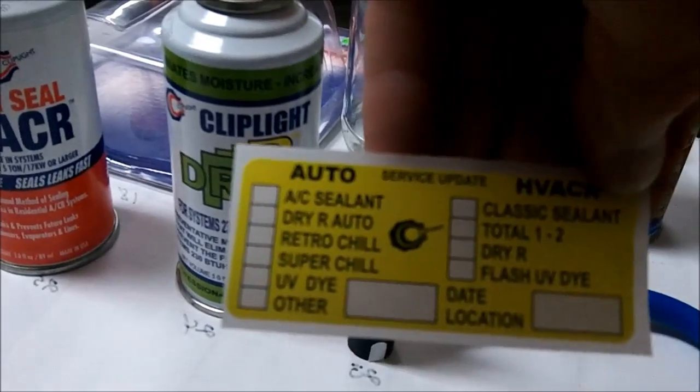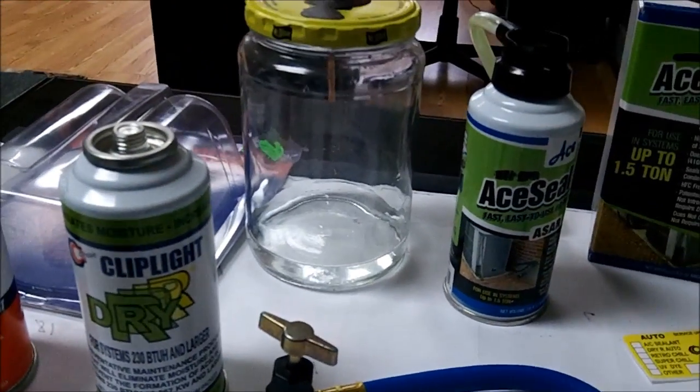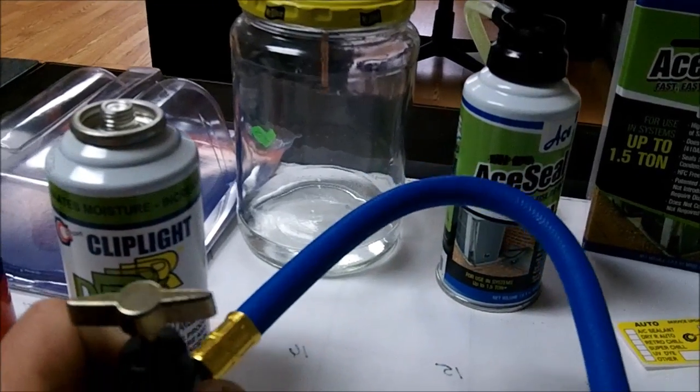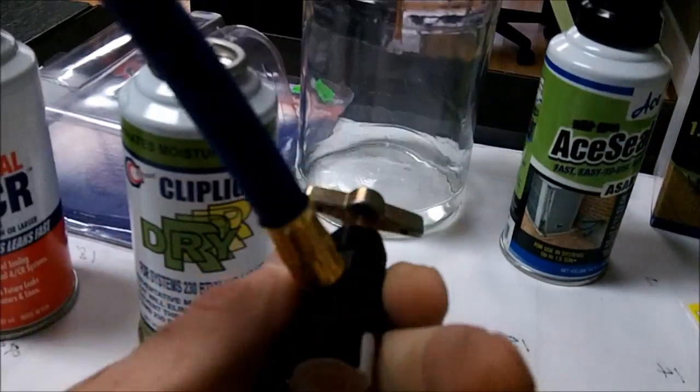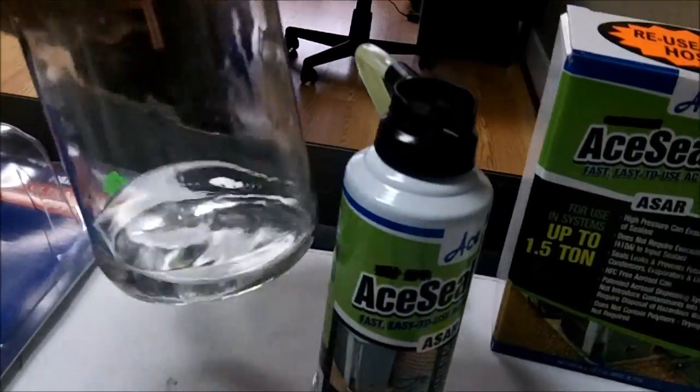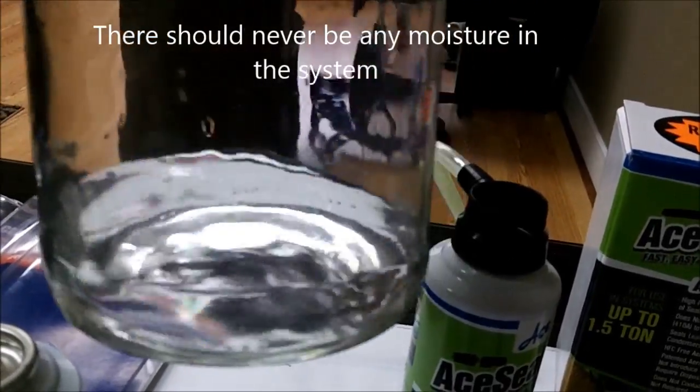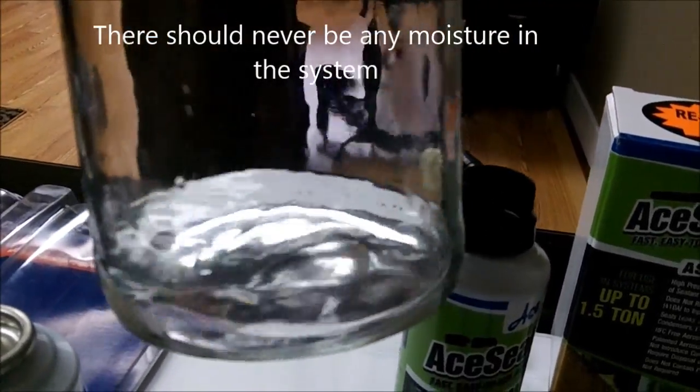The sticker says 'hey, I got stop leak in here, follow the correct procedures if you open the system up.' It comes with a hose. What I've done is I've taken my jar and I put some water in there, and I'm not going to pull a vacuum on the jar, I'm not going to put freon in the jar.